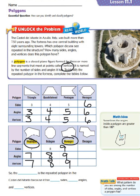And last, we have a decagon. The way I remember this one is with the beginning 'dec,' like decade — we know that decade means 10 years. So with a decagon, it's going to have 10 sides, 10 angles, and 10 vertices.